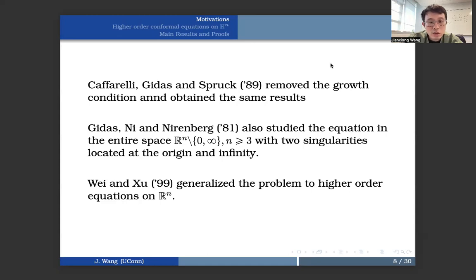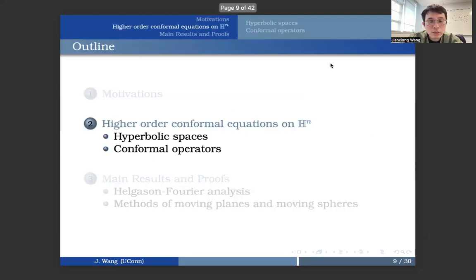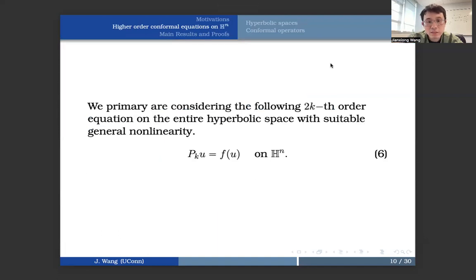Also, Gidas and Nirenberg studied the equation in the entire space Rn with two singularities located at the origin and infinity. Later, Wei and Xu generalize the problem to the higher order equations on Rn and obtained similar results concerning the explicit form of the solution of the positive solution and the uniqueness. So next I'm going to talk about some basic information about hyperbolic space and higher order conformal operators. But before that,